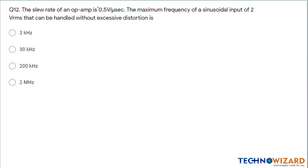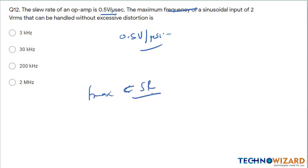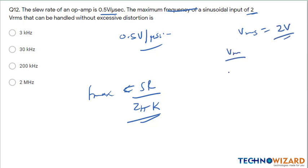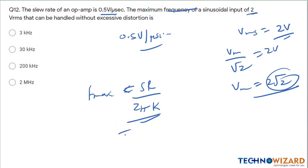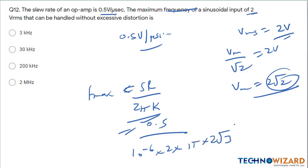Next question: the slew rate of an op-amp is 0.5 volt per microsecond. We have to find the maximum frequency F_max = slew rate / (2 * pi * V_peak). V_RMS is given as 2 volt, so V_peak = 2 * root 2. Slew rate = 0.5 volt per microsecond = 0.5 / (10^-6). Solving: F_max = 0.5×10^6 / (2 * pi * 2√2) = approximately 28.13 kilohertz, which is approximately equal to 30 kilohertz. This is a gate-level question unlikely to appear in diploma-level exam, but option B is the correct answer.